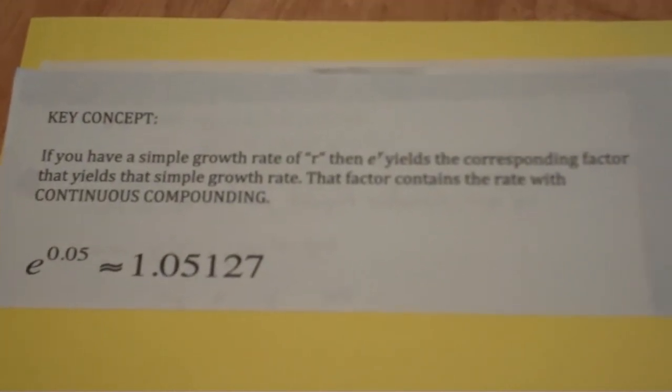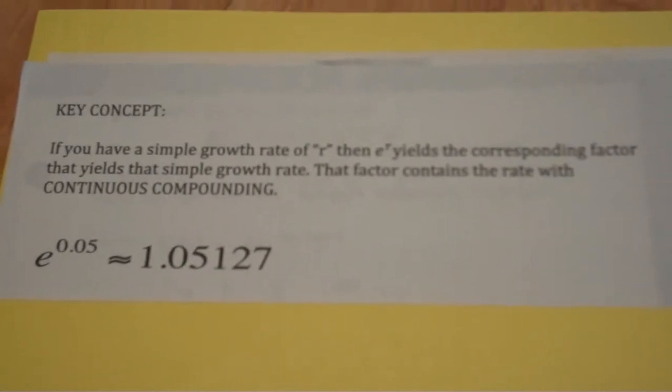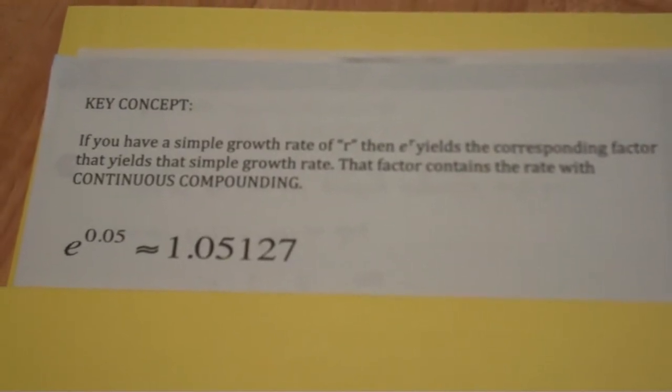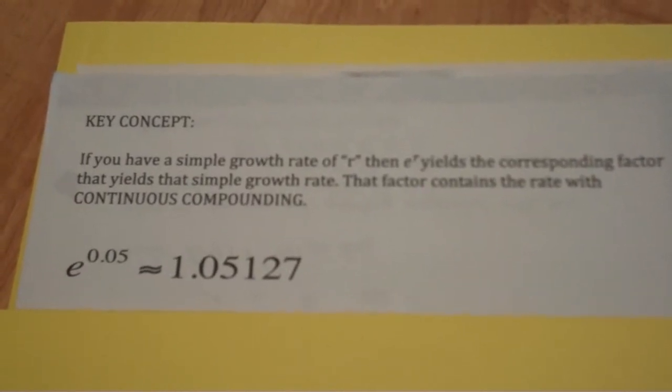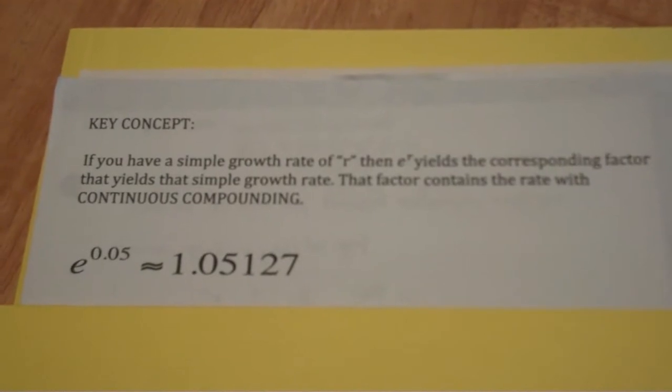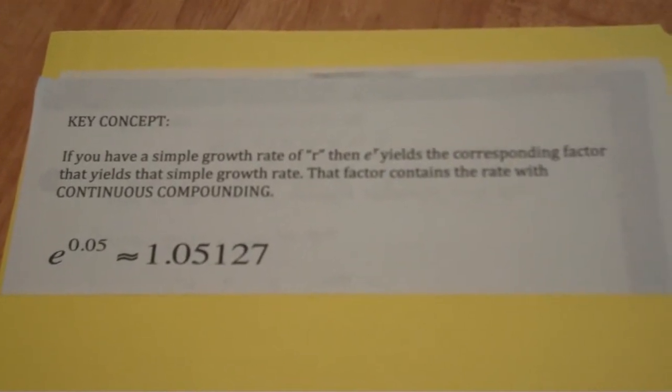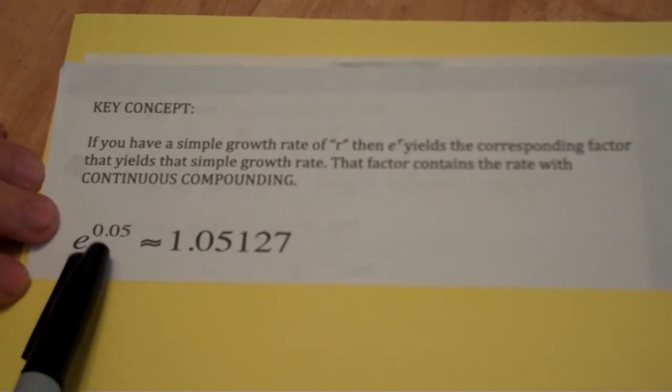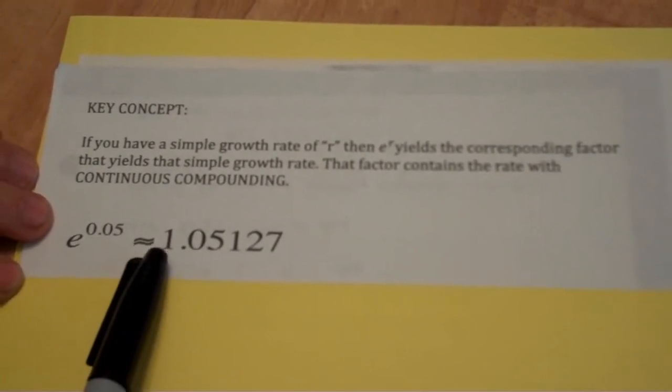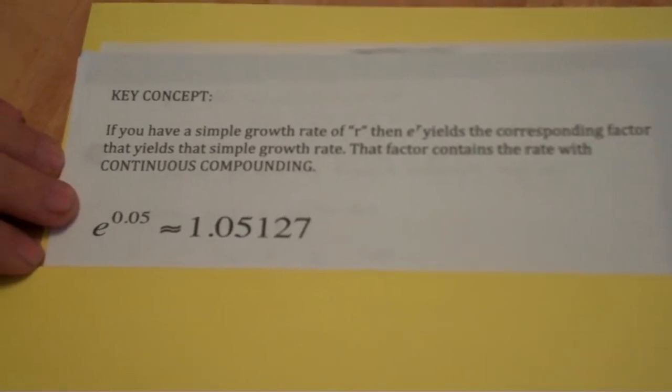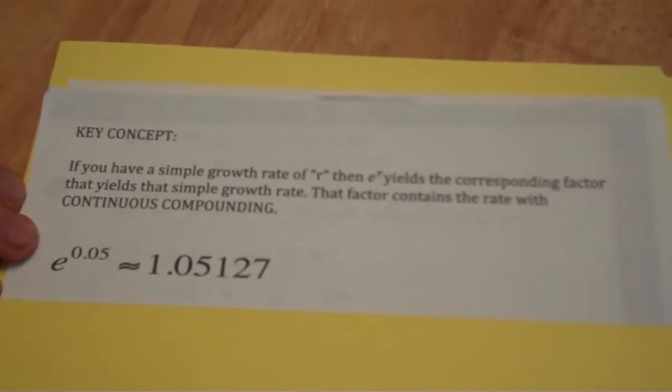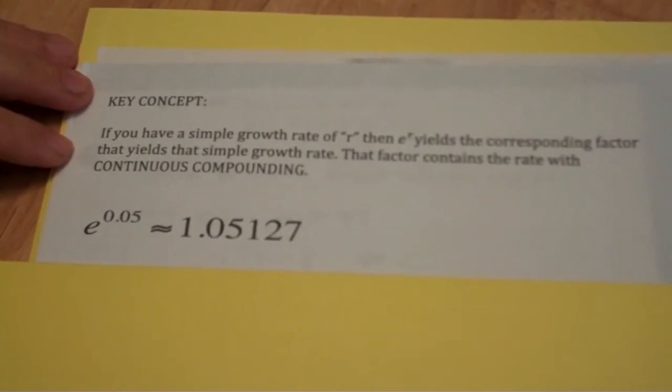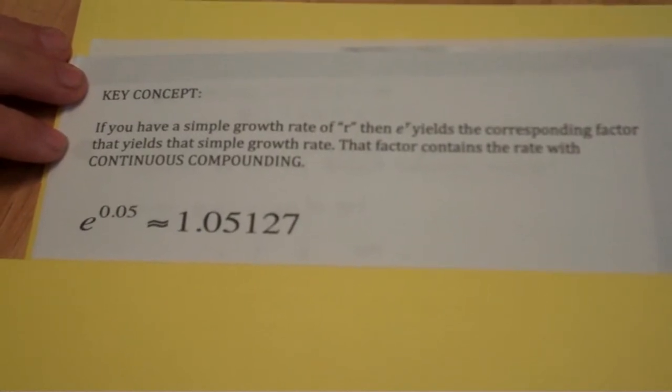If we have a bank account that pays 0.05% simple interest, we can figure out the continuous compounding rate much more quickly than other versions. We'll take e to the 0.05 power and the growth factor becomes 1.05127, which means the bank account after continuously compounding is actually paying 5.127%. That 0.127 extra is what you receive because of that continuous compounding.